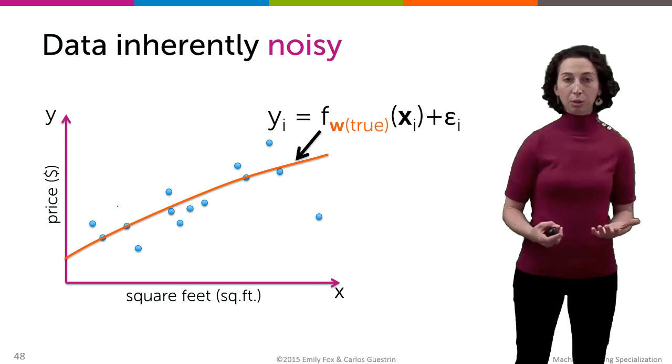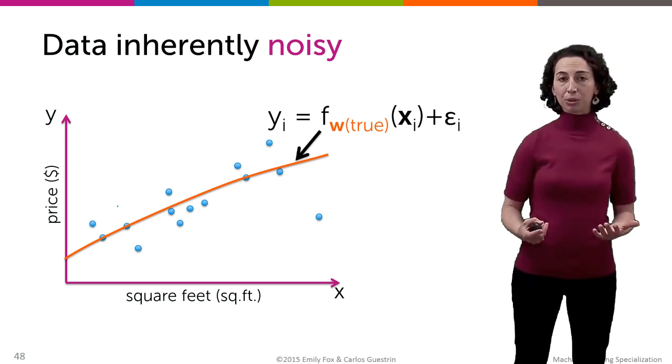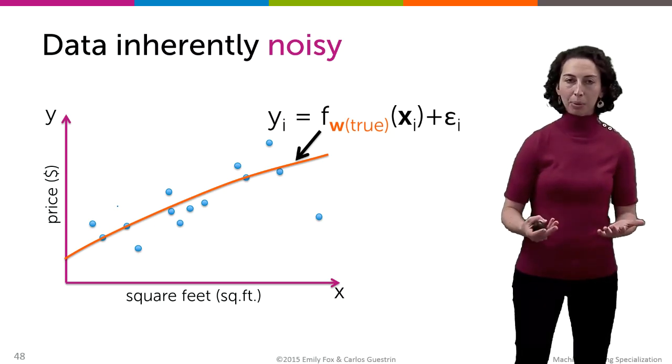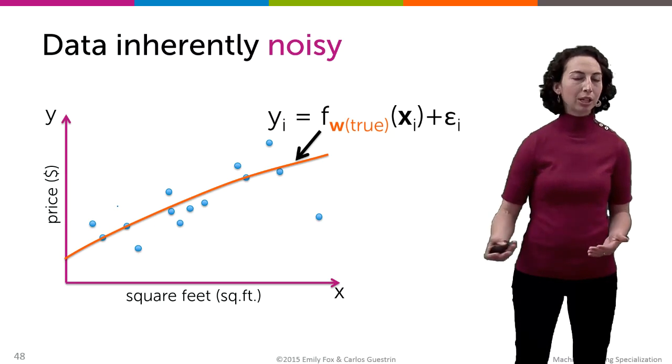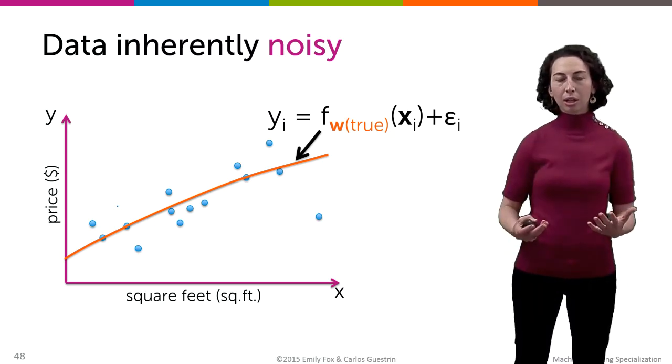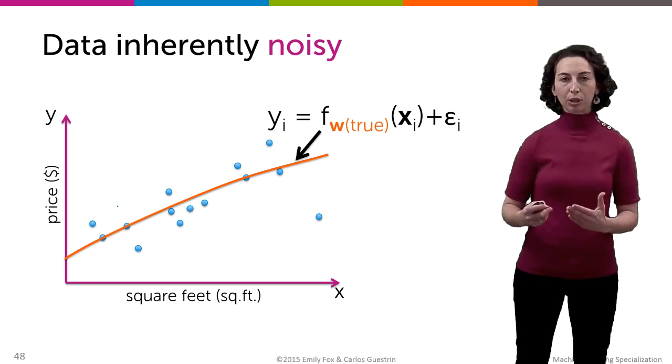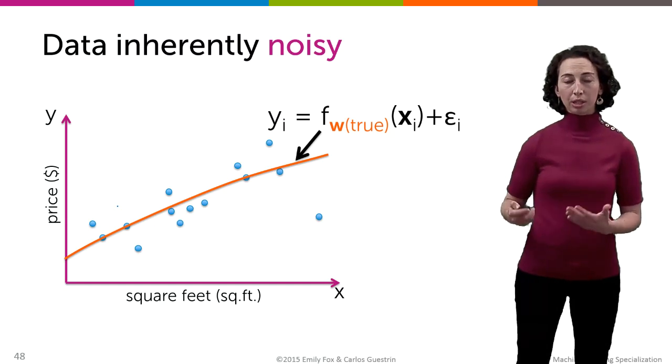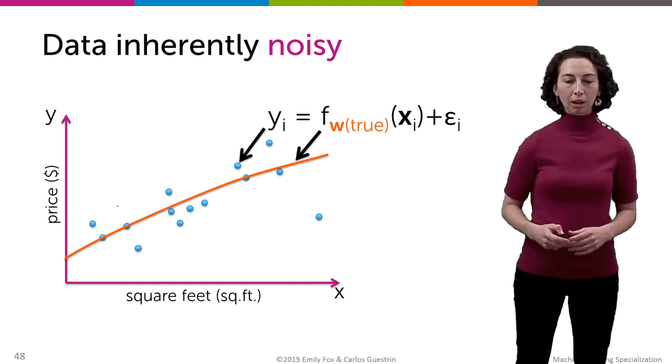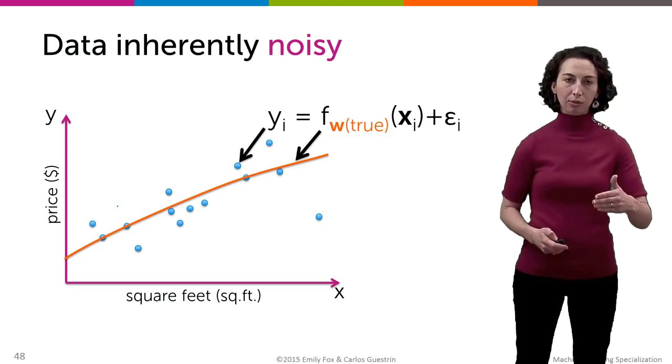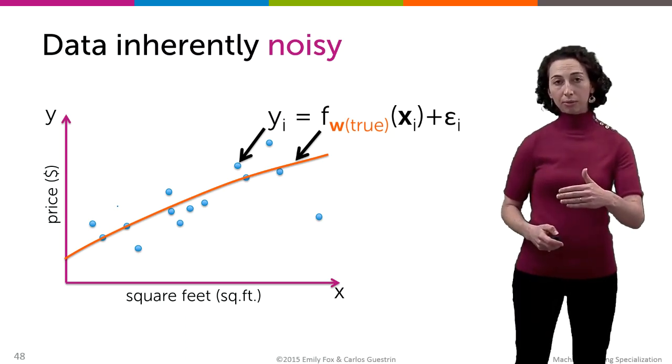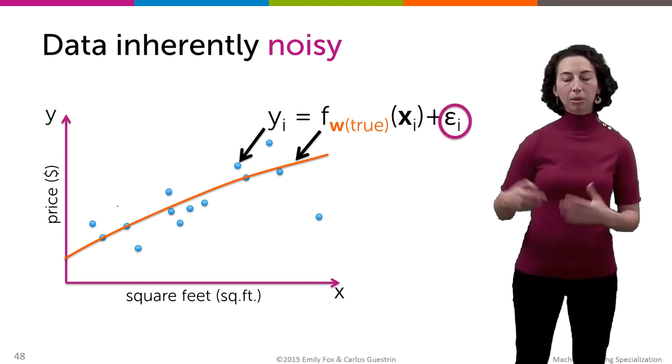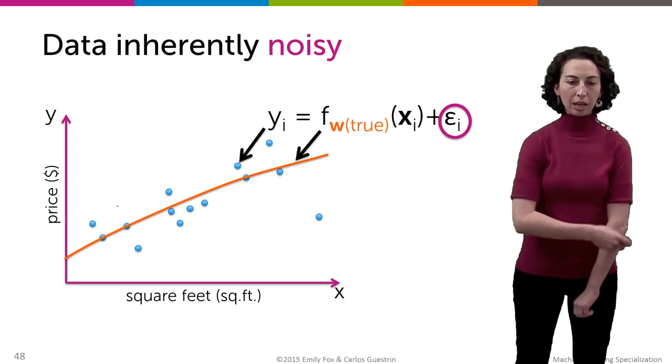There are a lot of other contributing factors, including other attributes of the house that are not included just in square feet, or how a person feels when they go in and make a purchase of a house, or a personal relationship they might have with the owners, or lots and lots of other things that we can't ever perfectly capture with just some function between square feet and value. And so that is the noise that's inherent in this process, represented by this epsilon term. So in particular, for any observation y_i, it's the sum of this relationship between square feet and the value plus this noise term epsilon_i specific to that ith house.